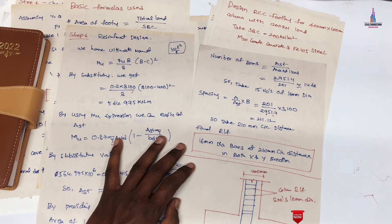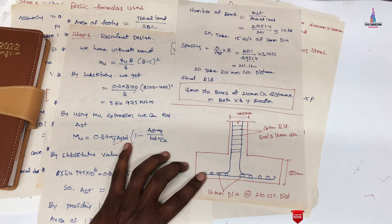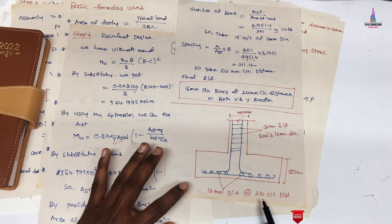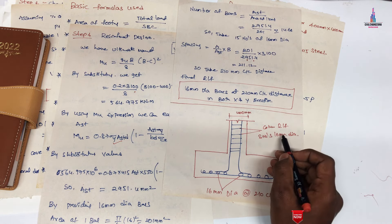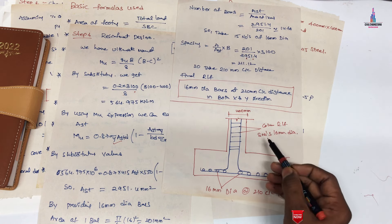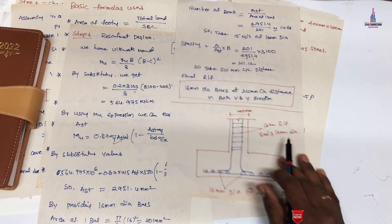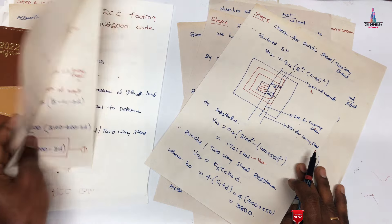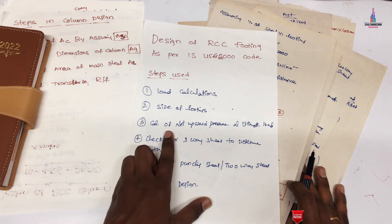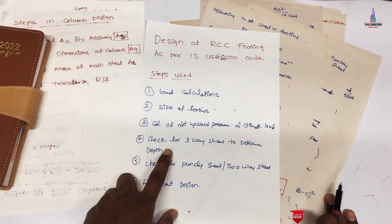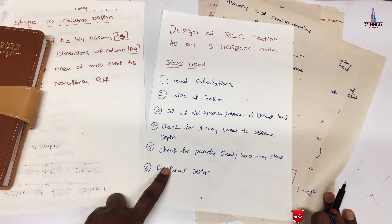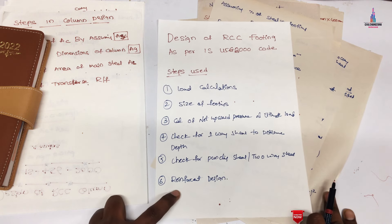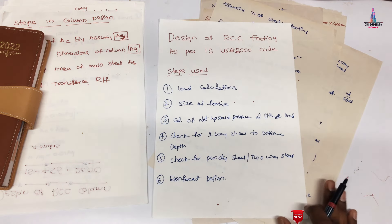The final reinforcement detail shows 16 mm diameter bars at 210 mm center-to-center in both directions for the 3.1 × 3.1 m footing, with an overall depth of 550 mm. The column reinforcement consists of 8 bars of 16 mm diameter as calculated in previous videos. This completes the six-step isolated footing design per IS456:2000. The complete calculation will be updated on civilbasics123.com. For queries, please comment below.